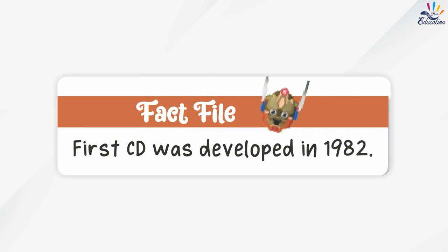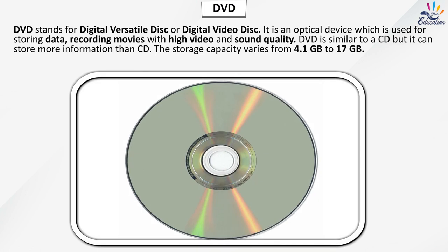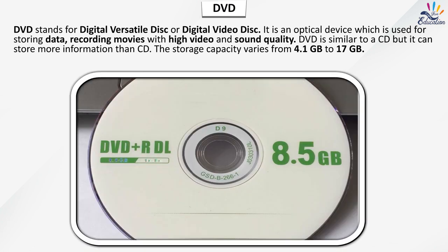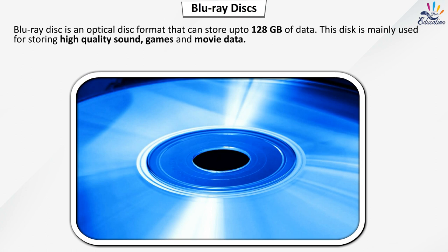The first CD was developed in 1982. DVD stands for digital versatile disk or digital video disk. It is an optical device used for storing data and recording movies with high video and sound quality. DVD is similar to a CD but can store more information, with storage capacity varying from 4.1 GB to 17 GB. Blu-ray disc is an optical disc format that can store up to 128 GB of data, mainly used for high quality sound, games and movie data.